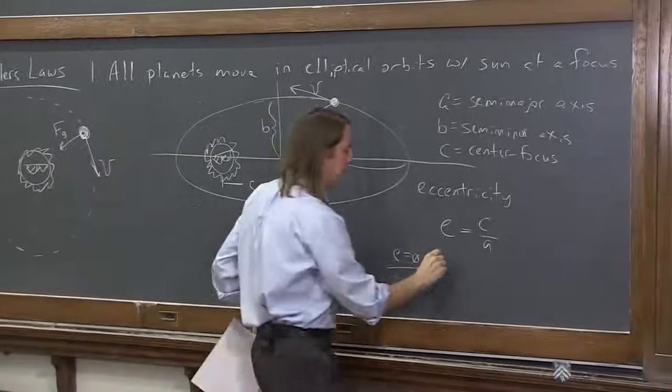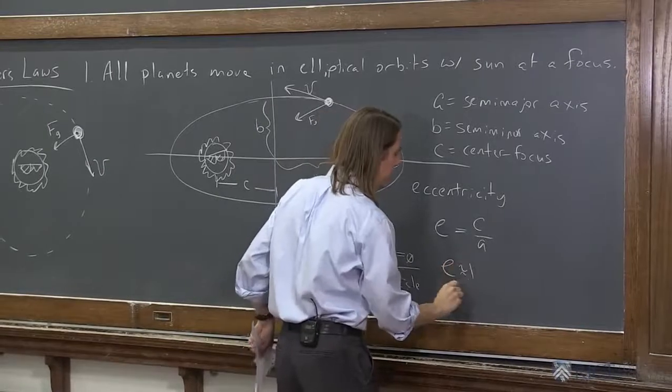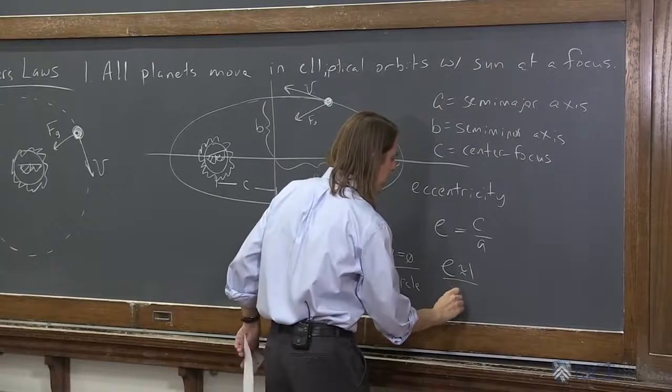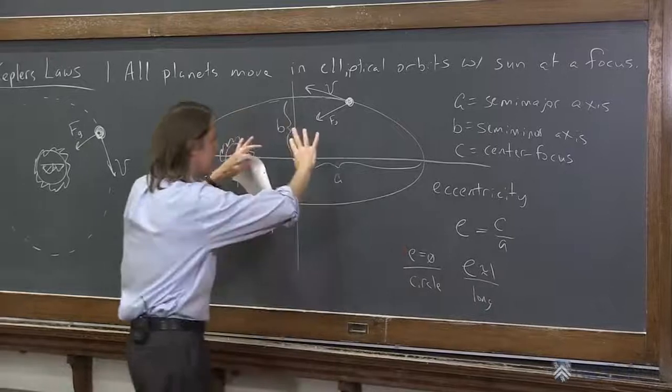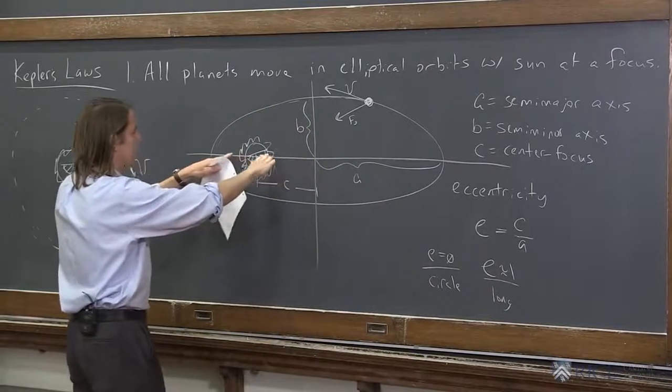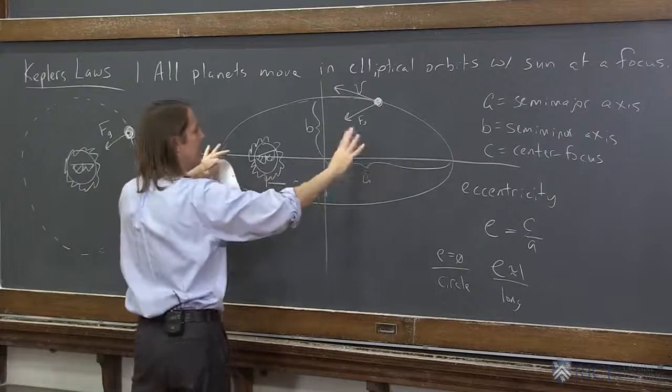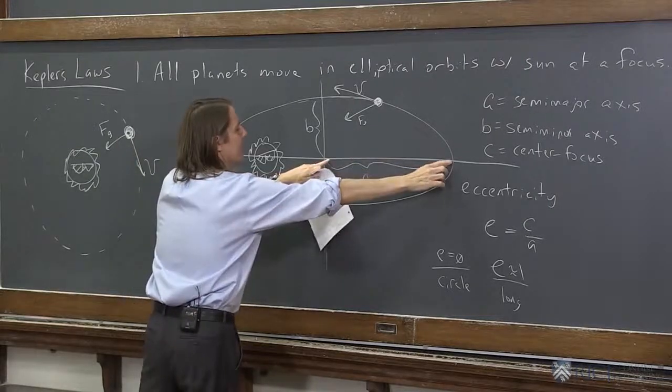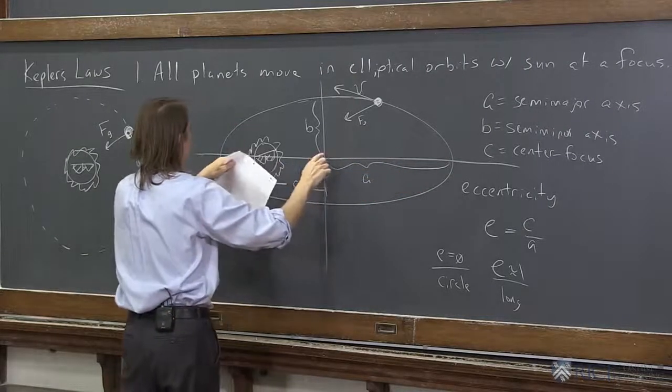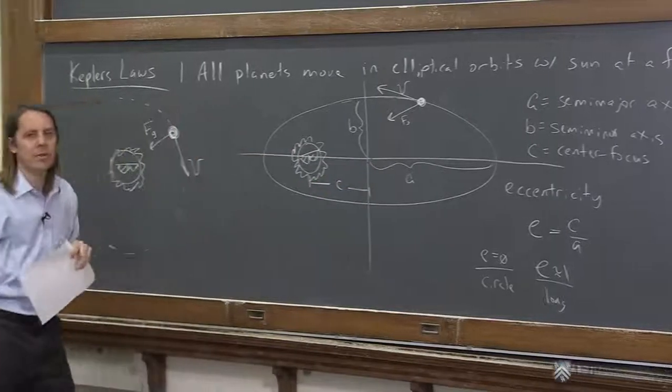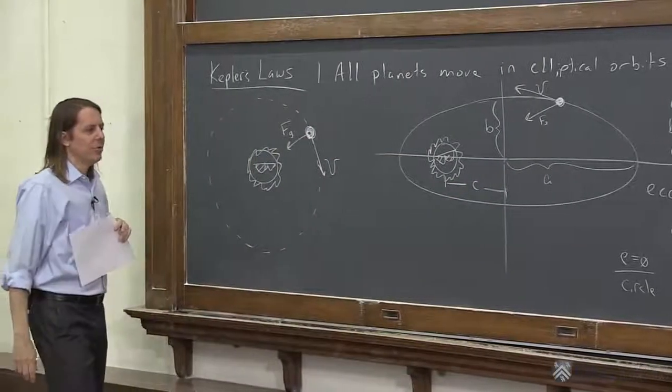But if you take E all the way to one, that's very long. If we stretch this out, this focus goes closer and closer to this edge, and A just gets bigger and bigger. So basically, as you stretch it, A becomes this elongated radius, and this gets closer and closer to the edge relatively. And E approaches one.